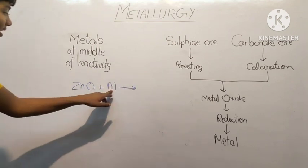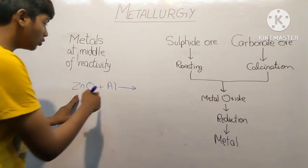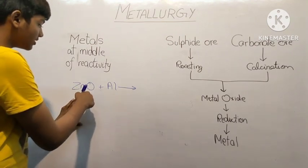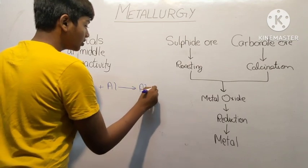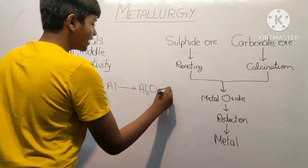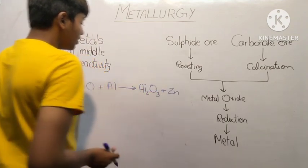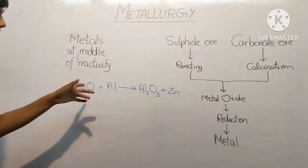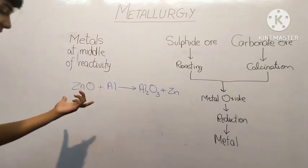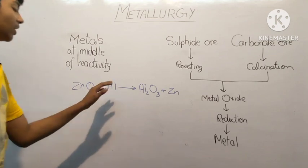What aluminum will do is that aluminum will replace Zn. Aluminum will replace Zn from oxygen, from ZnO. So we will get Al2O3 and we will get zinc. We know that displacement reaction is a highly exothermic reaction.